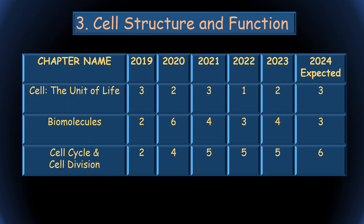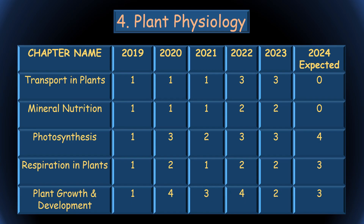The next unit — Cell Structure and Function — contains three chapters: Cell, Biomolecules, and Cell Cycle and Cell Division. This is a very easy unit and easy to score. In 2024, three questions are expected from Cell, three from Biomolecules, and Cell Cycle and Cell Division is very important with nearly six questions expected.